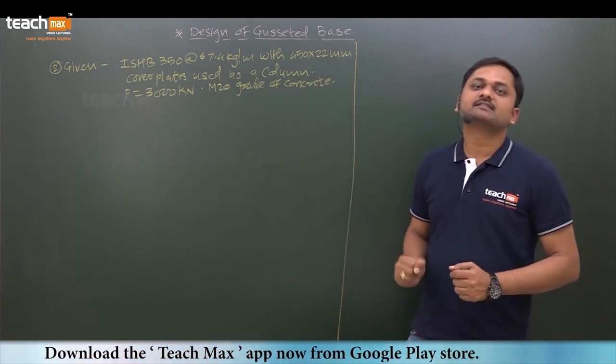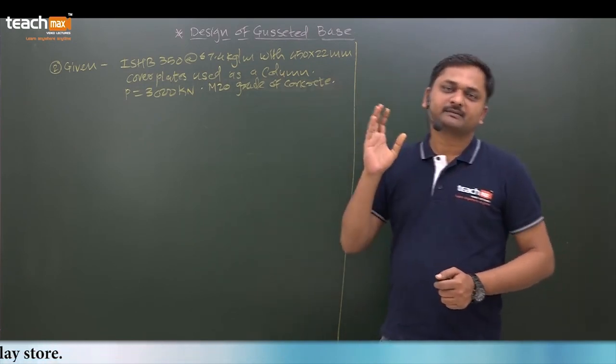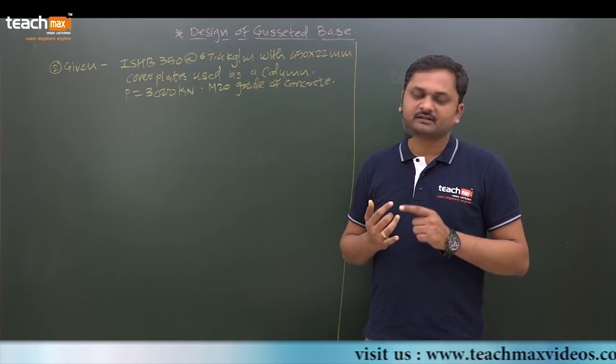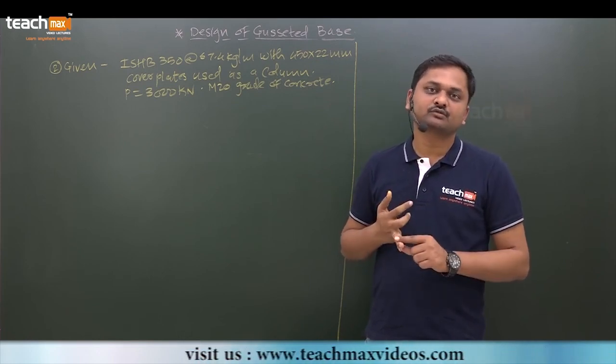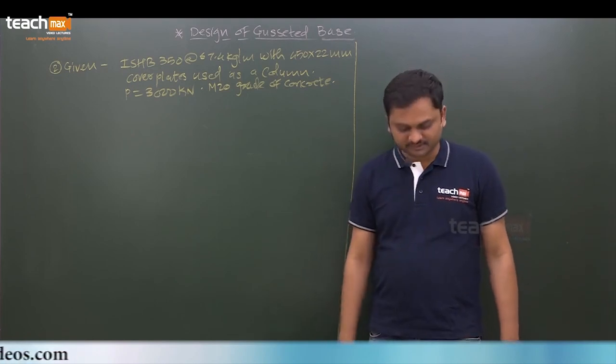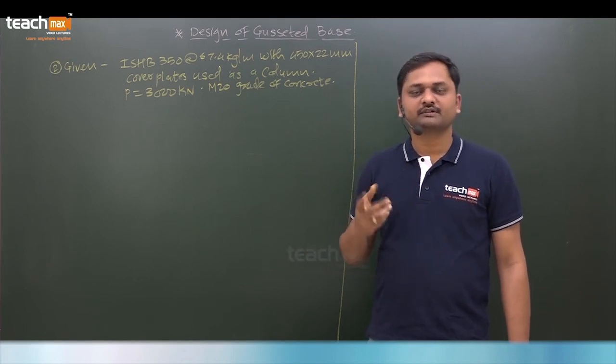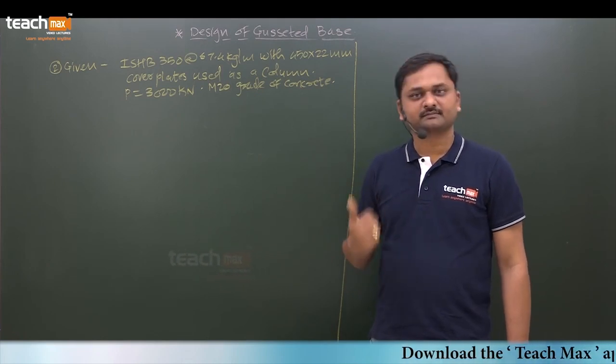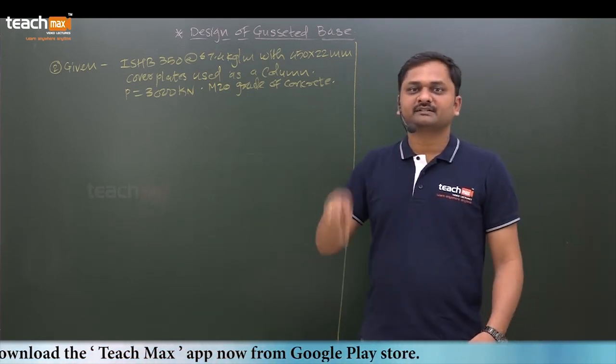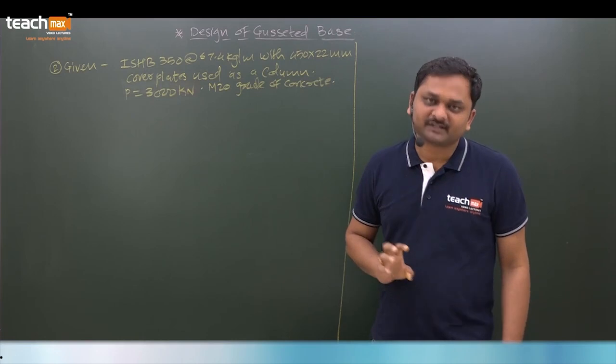Hello and welcome to TeachMax videos. Let us solve one more example on design of gusseted base. In the previous lecture, I explained the types of column bases: slab base, gusseted base, and moment-resisting base which we design as either slab base or gusseted base. For axial compression and columns subjected to uniaxial or biaxial bending, we can provide column bases using slab base or gusseted base. Here I am going to solve one more example on gusseted base subjected to axial compression. Let us learn the design of gusseted base.